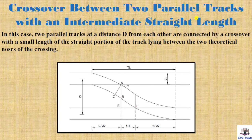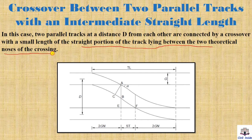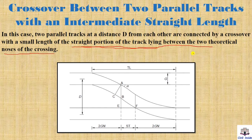Next is the crossover between two parallel tracks with an intermediate straight length. In this case, two parallel tracks at a distance apart from each other are connected by a crossover with a small straight portion of track lying between the two vertical noses of the crossing. This straight portion is the cross lead, and together these form the total length of this layout.